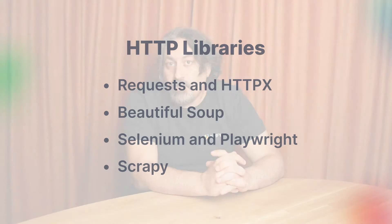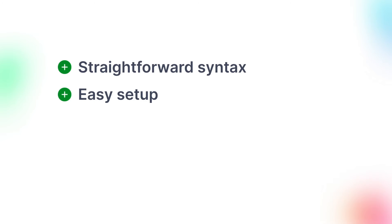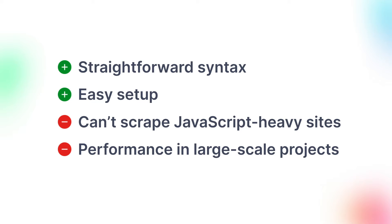Once you have the HTML content, you need a way to parse it and extract the data you're interested in. BeautifulSoup is the most popular HTML parser in Python, allowing you to easily navigate and search through the HTML tree structure. Its straightforward syntax and easy setup also make BeautifulSoup a great option for small to medium web scraping projects, as well as web scraping beginners. The two major drawbacks of BeautifulSoup are its inability to scrape JavaScript-heavy websites and its limited scalability, which results in low performance in large-scale projects.